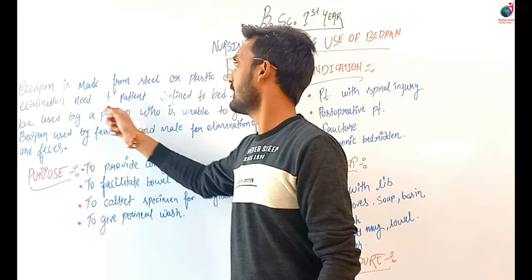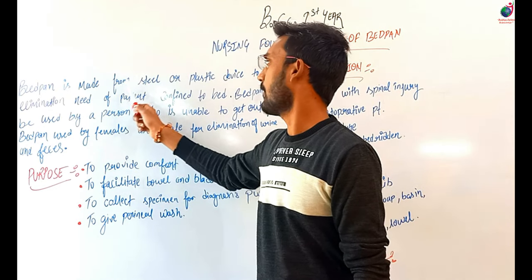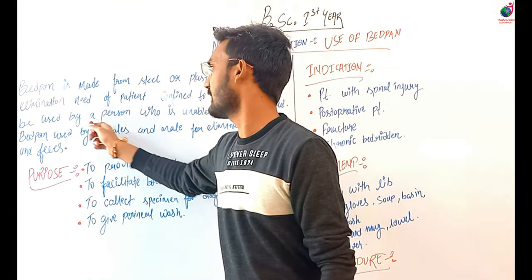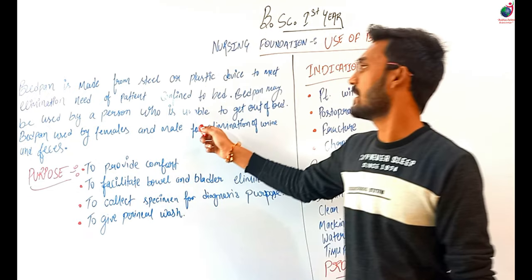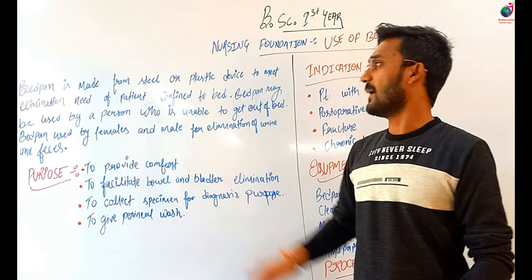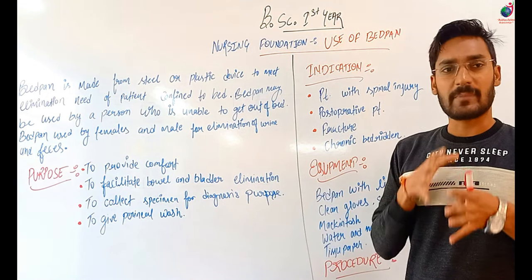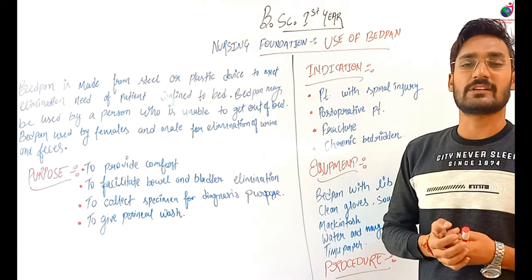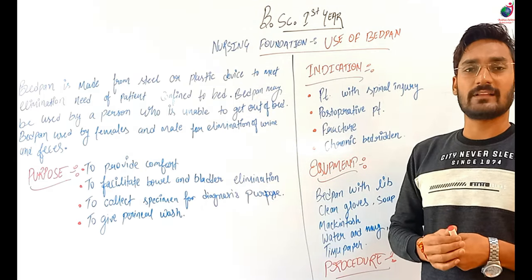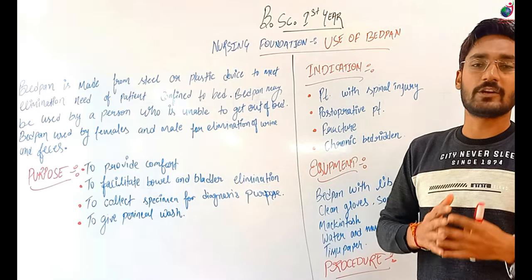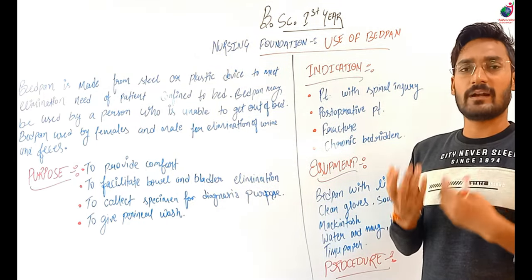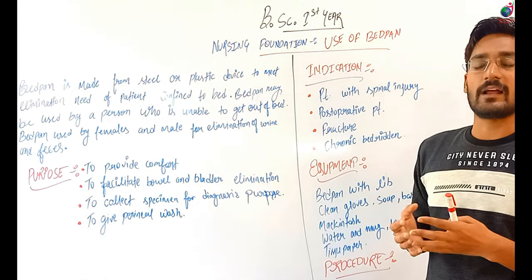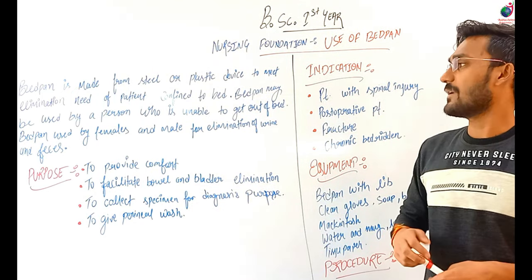A bedpan is made from steel and plastic. It is used to meet the elimination need for a patient confined to bed — for example, patients on bed rest. We use it for patients to eliminate faeces or urine.